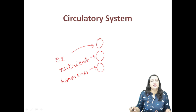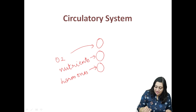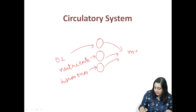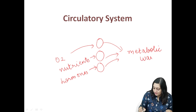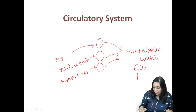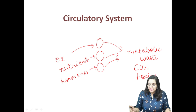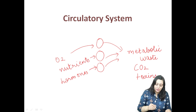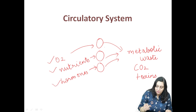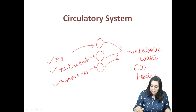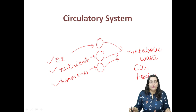While using these substances, they also generate metabolic waste such as carbon dioxide, toxins, etc. So the circulatory system is required to bring these substances to the cells and later on to remove these metabolic waste away from the cells.